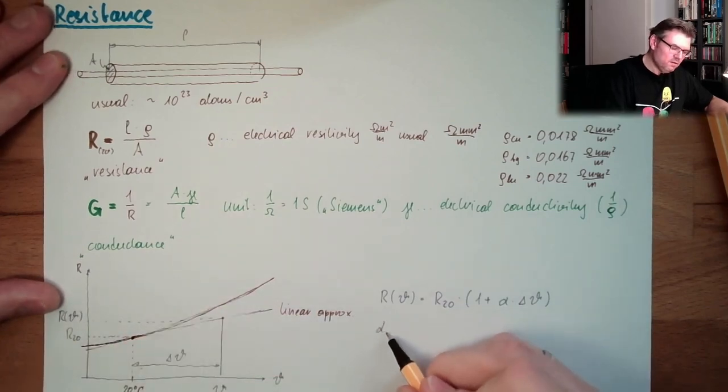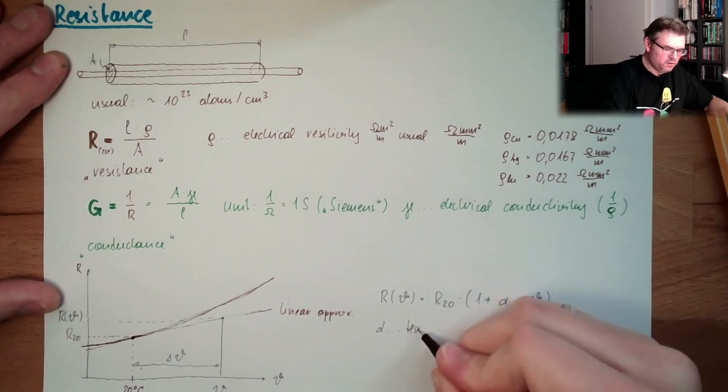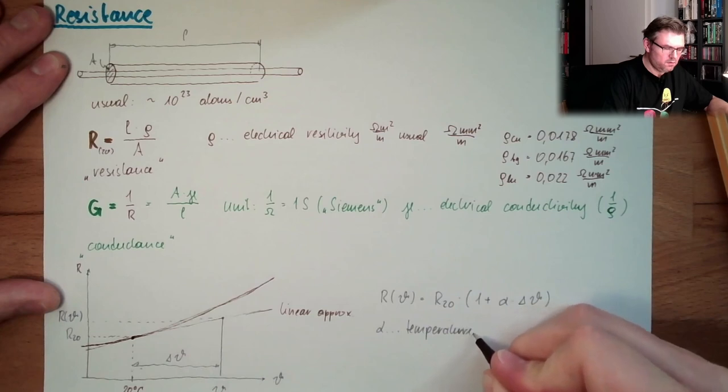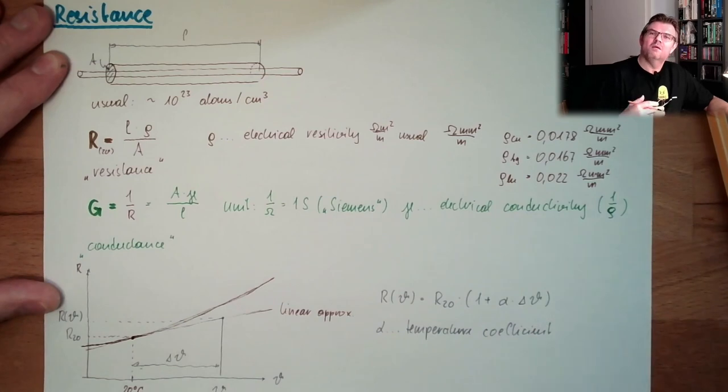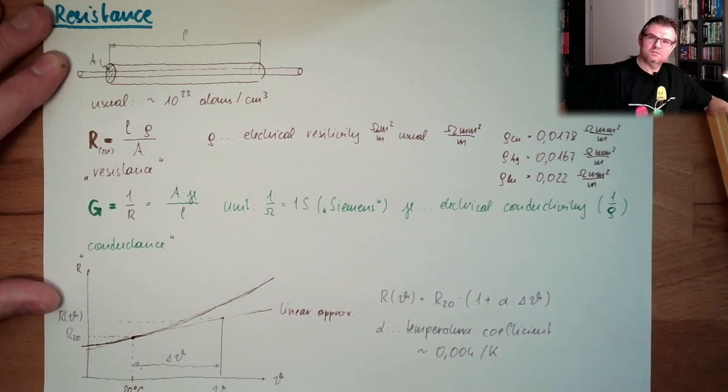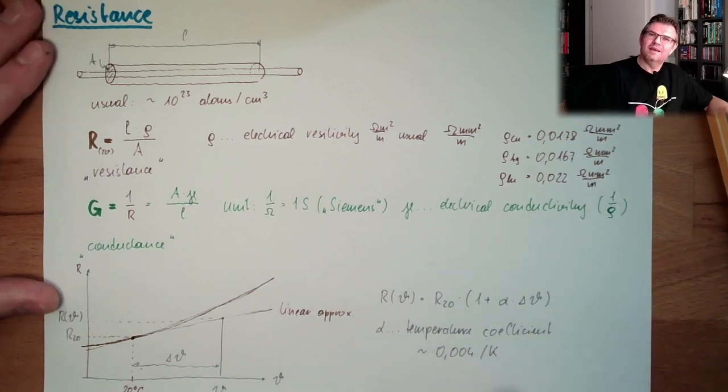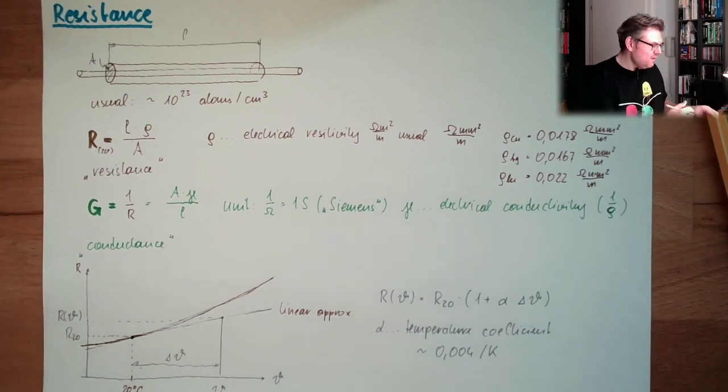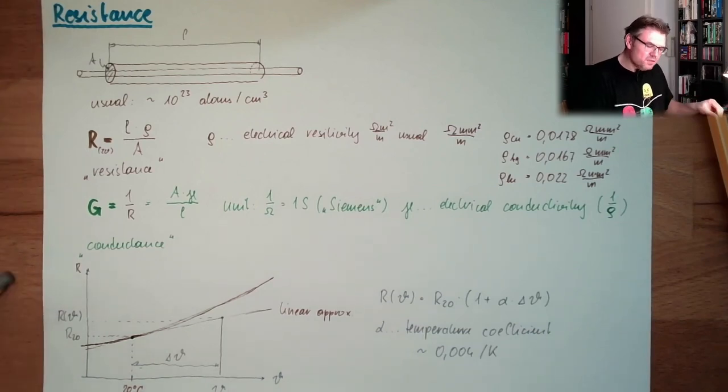This alpha is called temperature coefficient. It's given in per degree Celsius or by Kelvin. And usually the materials also have 0.004 per Kelvin. This is a usual. It's always a material constant. If you don't have nothing better, use this.